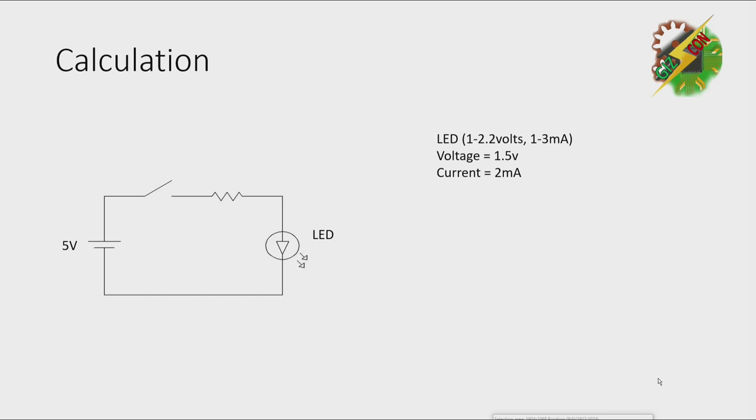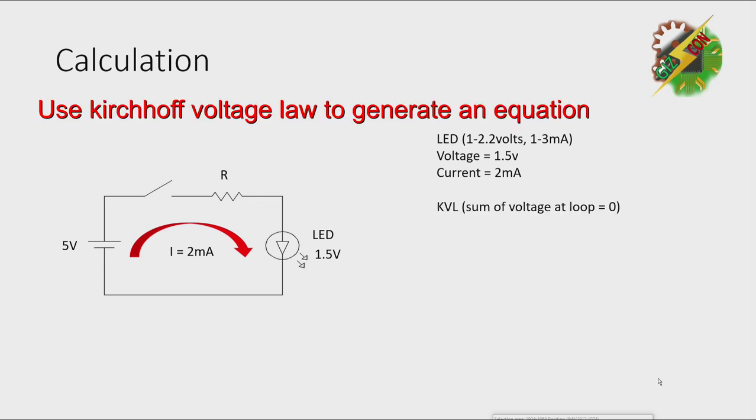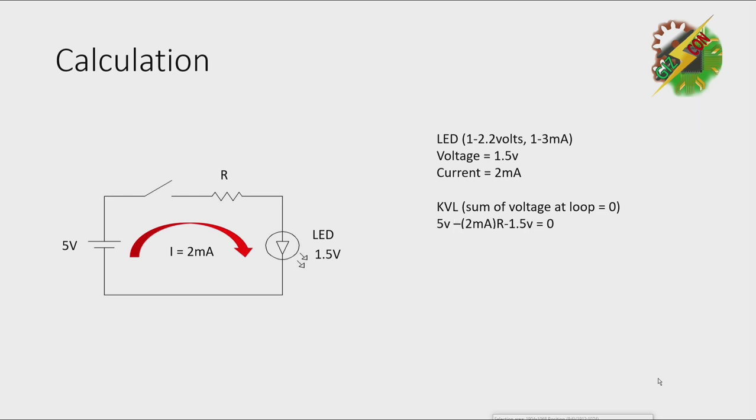Now we can use the KVL or Kirchhoff's voltage law. Sum of the voltage at the loop equals zero. Then we have our equation: 5 volts minus 2 milliampere times R minus 1.5 equals zero.